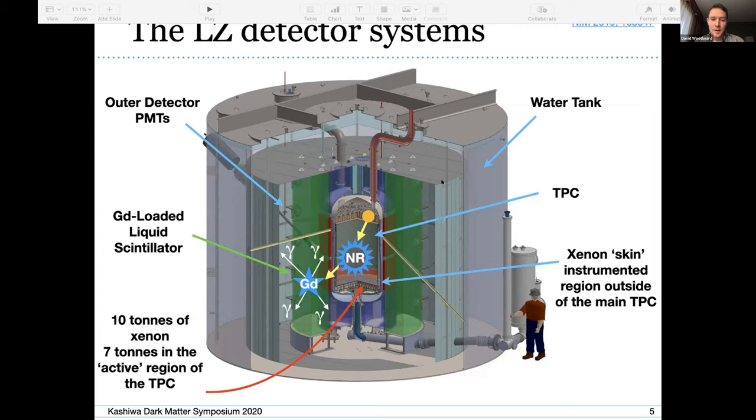Similarly, we have an outer detector which is actually a gadolinium loaded liquid scintillator. This is held in acrylic tanks just outside of the cryostat volume. The idea of the scintillator is to capture neutrons, which if they scatter once inside of our TPC, they look exactly like a WIMP. So we capture the neutrons as they go out of the TPC, and if we can do that, then we can also veto those type of events too.